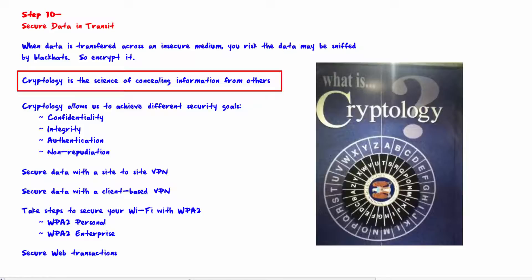We encrypt the data into ciphertext, which makes it difficult — hopefully very difficult — to read by others. Ciphertext can be decrypted to get back the original clear text.